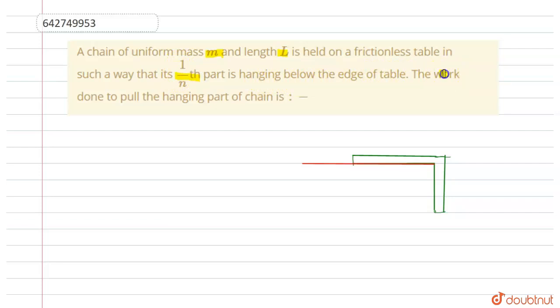The work done to pull the hanging part of the chain is—so in this question we have to find the work done to pull the hanging part of the chain. The length of the chain is l.